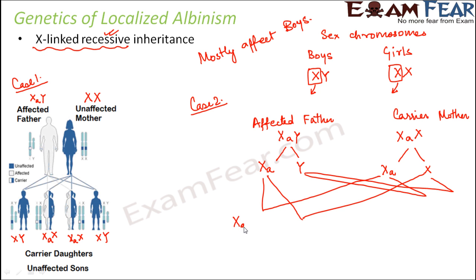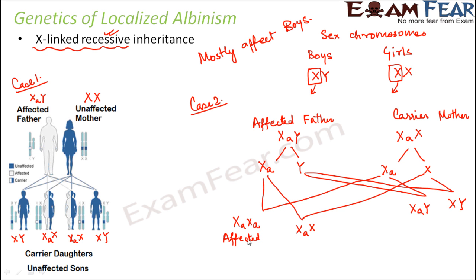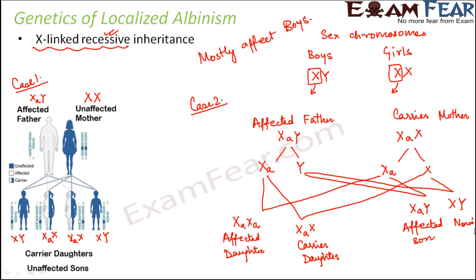The four possibilities are: X-A, X-A — an affected daughter; X-A, X — a carrier but not affected daughter; X-A, Y — an affected son; and X, Y — a normal unaffected son.